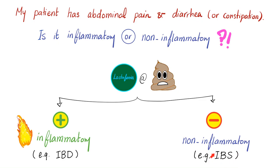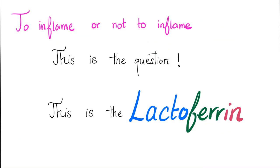You cannot objectively confirm the diagnosis of IBS. There is no lab test that will tell you this patient has IBS. Similar conditions include fibromyalgia, thalamic pain syndrome, and sympathetic dystrophy. These conditions are real, but you cannot measure something in the lab that diagnoses the disease. To inflame or not to inflame — this is the lactoferrin.